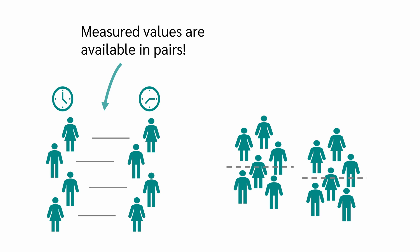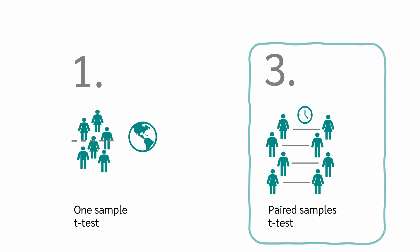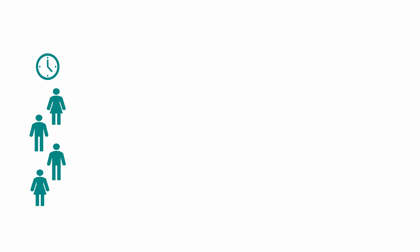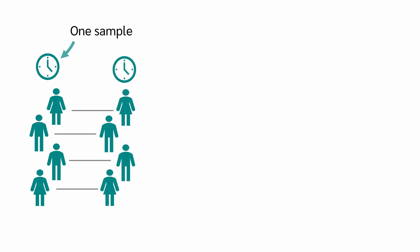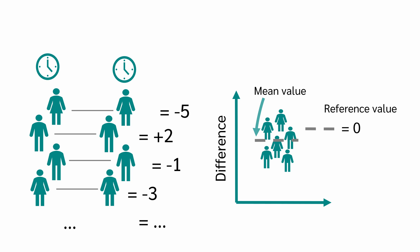Independent samples are made up of people and measurements that are independent of each other. Here is an interesting note: the paired samples t-test is very similar to the one-sample t-test. We can think of the paired samples t-test as having one sample measured at two different time points. We calculate the difference between the paired values — for example, minus 5, plus 2, minus 1, and so on — giving us values for one sample. We then test whether the mean of those differences deviates from a reference value of zero. This is exactly what the one-sample t-test does.